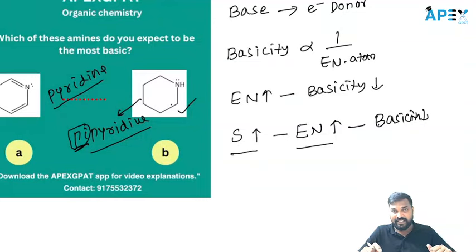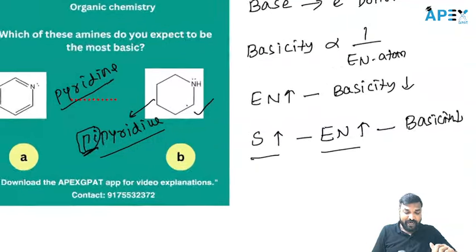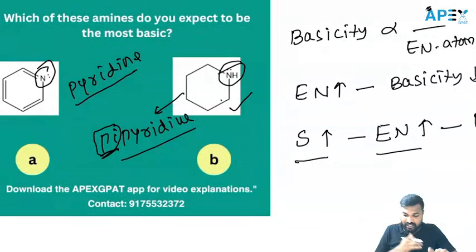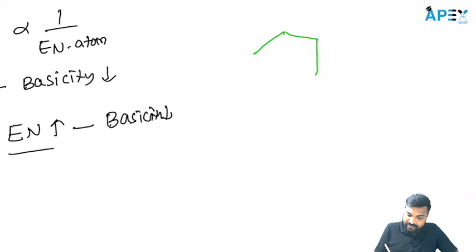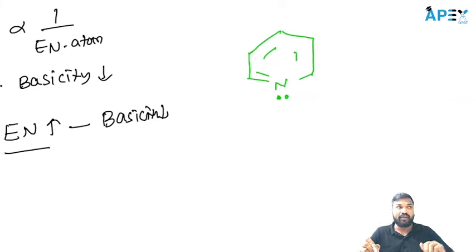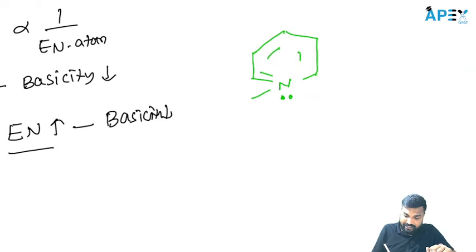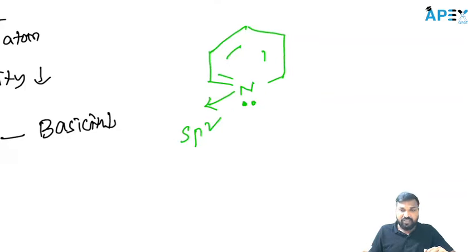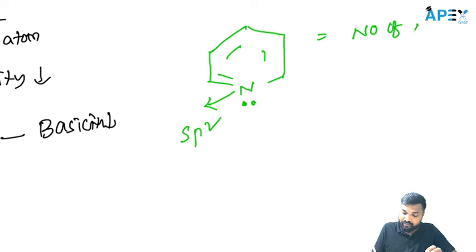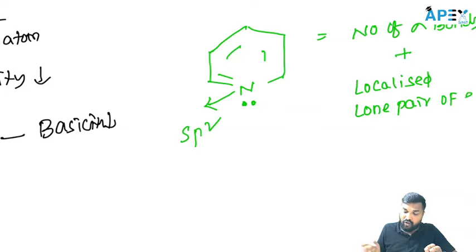S-character increases → electronegativity increases → basicity is less. Now let's find the hybridization of the nitrogen in each compound. Use this simple trick: to find hybridization, look at the number of sigma bonds plus the number of localized lone pairs of electrons.